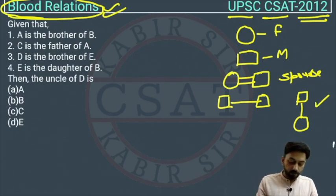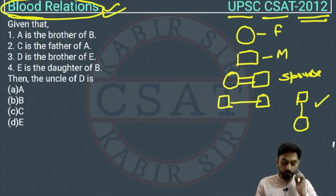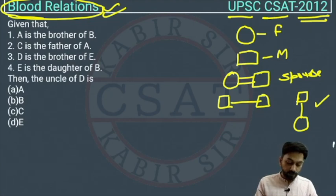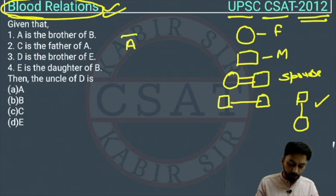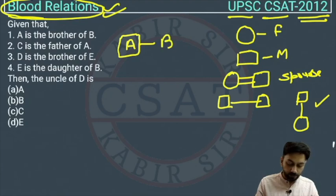Now let's read the problem. As we go through each statement, we draw the diagram accordingly. The first statement is: A is the brother of B. So A is male. A is the brother of B, but we don't know the gender of B yet.